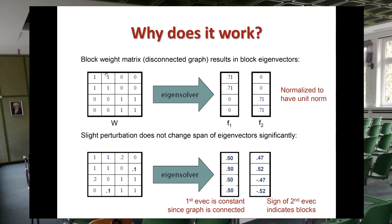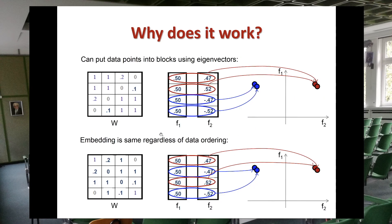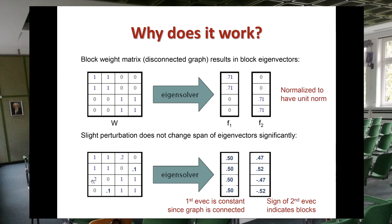If you have a perfect block weight matrix with ones and zeros where each block corresponds to a cloud of points — a disconnected graph — the first eigenvector will contain specific indicator values and the second eigenvector will contain zeros and nonzero values, normalized to unit norm. If there are perturbations so values are not exactly zero, the first eigenvector won't provide enough information for clustering, but the second eigenvector will contain the necessary information.